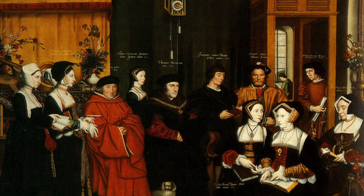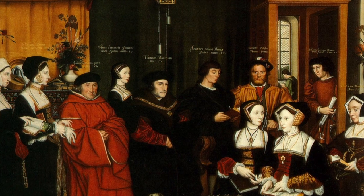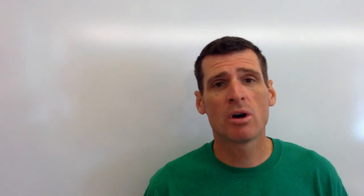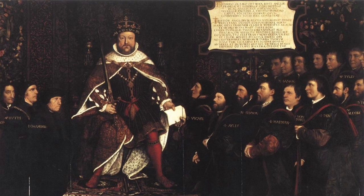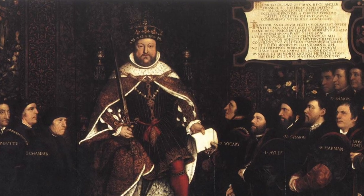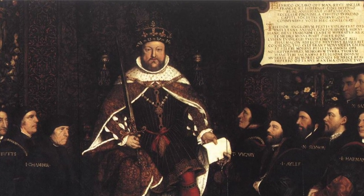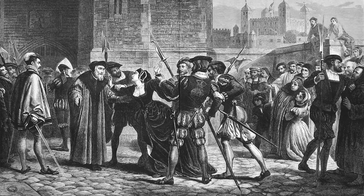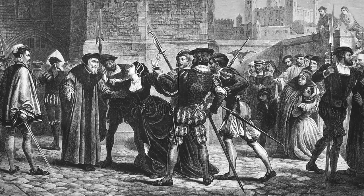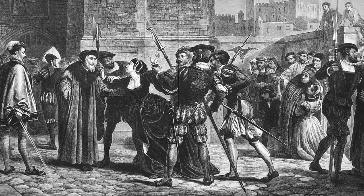He didn't just write about ideas — he actually tried to put them into action, working under Henry VIII. He said in his introduction to Utopia that 'things will never be perfect until human beings are perfect, which I don't expect them to be for a number of years.' His strong religious beliefs brought him into conflict with Henry VIII when Henry decided to break from the Catholic Church. Thomas More was ultimately executed for his beliefs — he chose that over going along with the break from the Church.